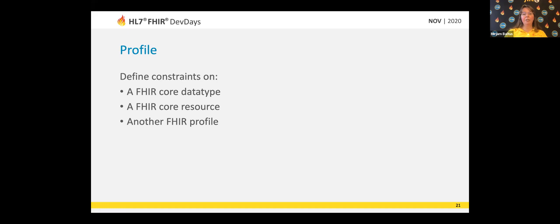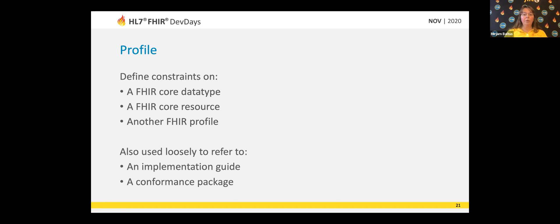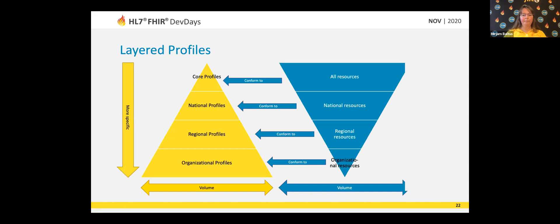Profiles and extensions are usually the first thing you start working on. When I talk about profiles, I usually mean defining constraints on a FHIR core data type or core resource type. I could also create a profile that's based on another FHIR profile. In the modeling world, you will also see it loosely referred to as creating an implementation guide or creating a conformance package — the whole set of FHIR conformance resources together. The term profiling is just overloaded in the modeling world.